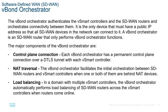The vBond orchestrator authenticates the vSmart controller and SD-WAN routers and orchestrates connectivity between them. It is the only device that must have a public IP address so that all SD-WAN devices in the network can connect to it. The major components of vBond include the control plane connection, NAT traversal, and load balancing.